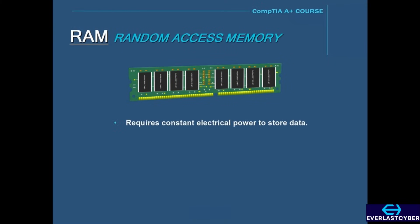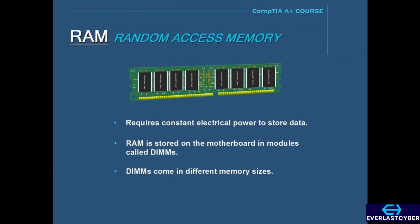RAM requires constant electrical power to store data, and if the power is turned off, then the data is erased. RAM is stored on the motherboard in modules called DIMMs, and these DIMMs come in different memory sizes. Today, they range anywhere from 128 megabytes up to 64 gigabytes of memory per DIMM.